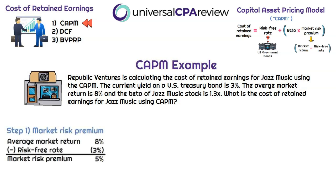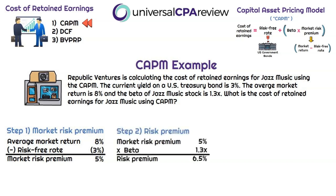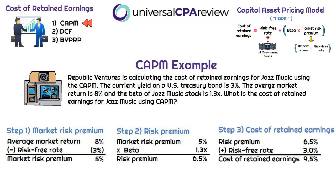Step one: calculate the market risk premium. Take the average market return of 8%, subtract the risk-free rate of 3% (U.S. Treasury bonds), giving a market risk premium of 5%. Step two: calculate the risk premium by multiplying 5% times Jazz Music's beta of 1.3x — that's 6.5%. Step three: add the risk premium of 6.5% to the risk-free rate of 3%, giving a cost of retained earnings of 9.5% using CAPM.